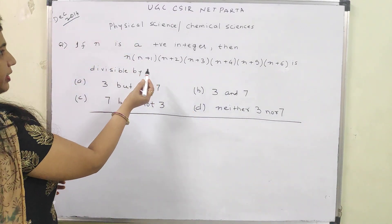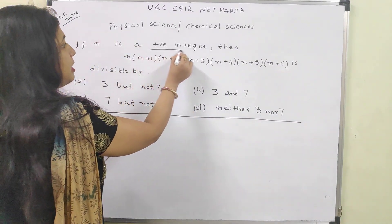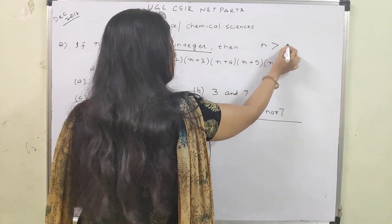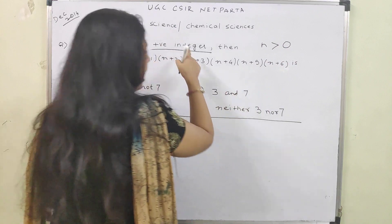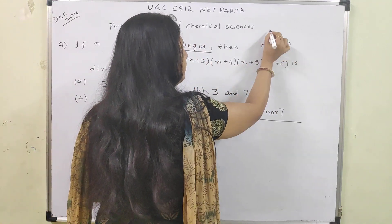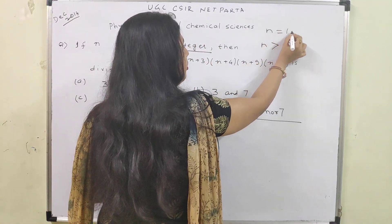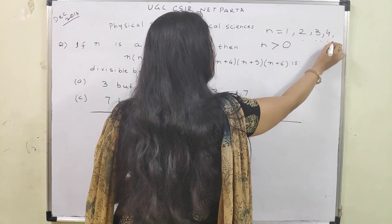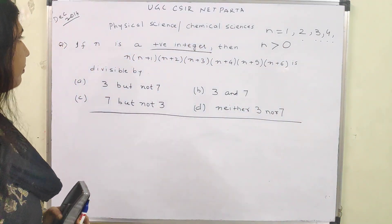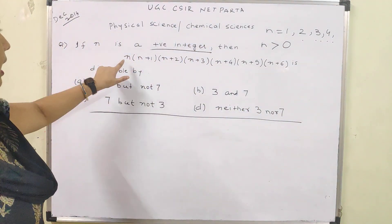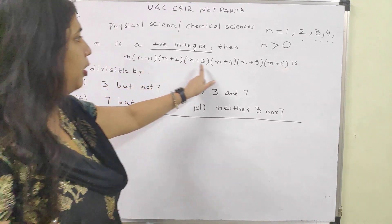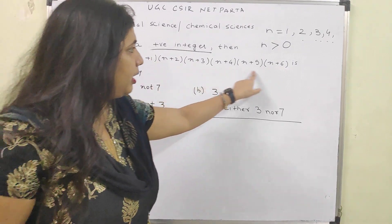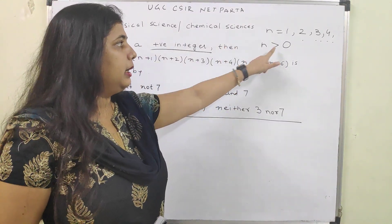Let us count how many numbers we have. First of all, n is a positive integer — positive integer means greater than 0. As it is an integer, n will start from 1, 2, 3, 4 and so on. Further, n, n+1, n+2, and all these numbers given in this product will also be greater than 0.